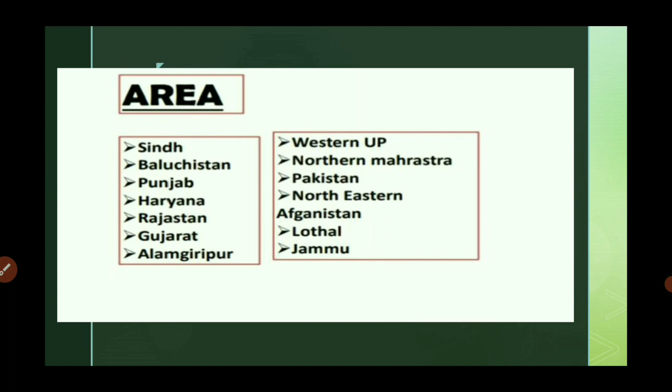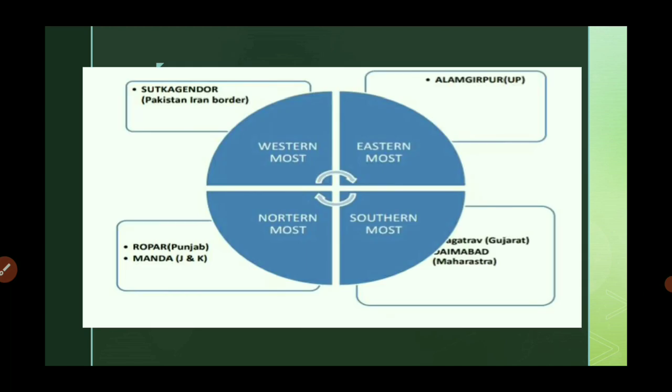The areas covered by the Indus Valley Civilization include Sindhu, Baluchistan, Pakistan, Haryana, Rajasthan, Gujarat, Alamgirpur in western UP, northern Maharashtra, northern and eastern Afghanistan, Lothal, and Jammu. The easternmost site is Alamgirpur in UP; southernmost is Daimabad in Maharashtra; northernmost is Ropar in Punjab and Manda in Jammu and Kashmir; and westernmost is Sutkagen-dor on the Pakistan-Iran border.